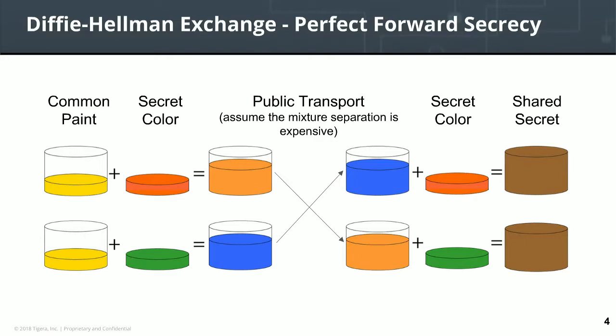So independently of ever sharing their private keys or secret colors, or anything derived from them, they both come up with the same key — and they can now use that shared secret key to encrypt traffic. The key thing here is that the secret key to encrypt the data is never transmitted over the wire. The only place the secret key exists is with the end user who generated it, which means it can never be intercepted.